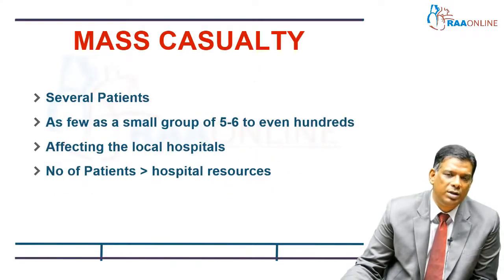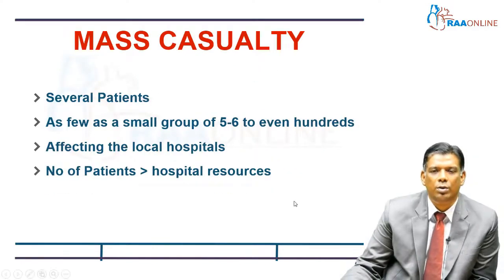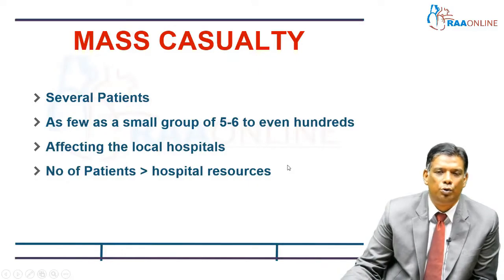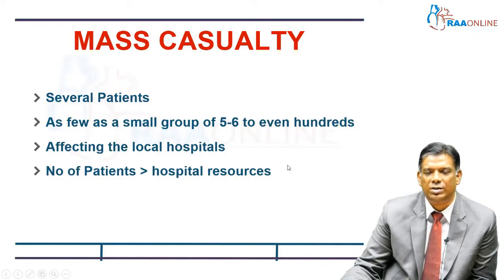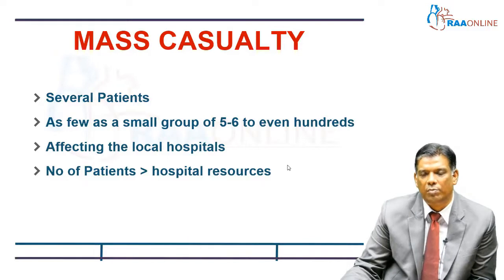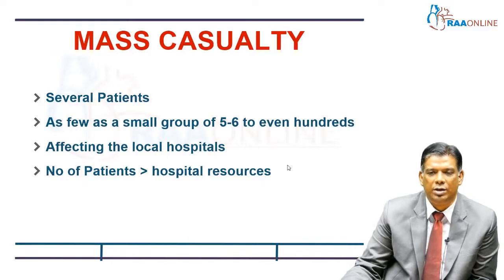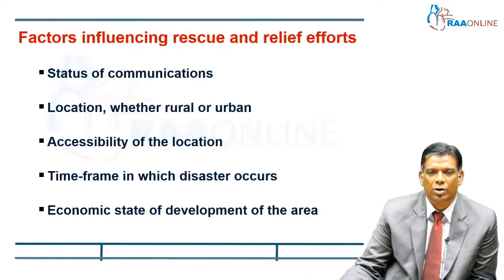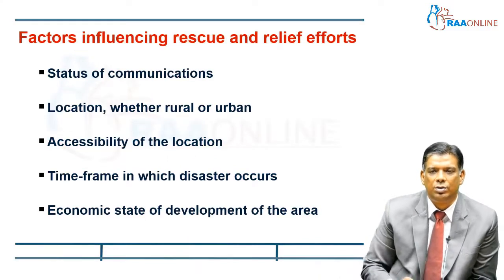Mass casualty is when you have a group as small as five to six to even hundreds affecting the local hospitals, where the number of patients is greater than the hospital resources.